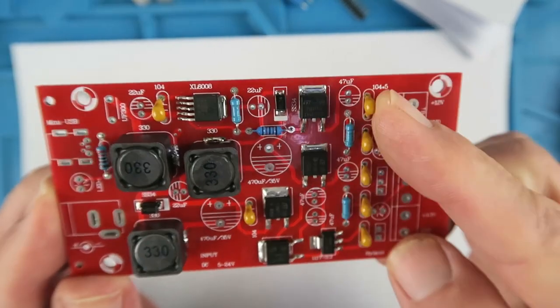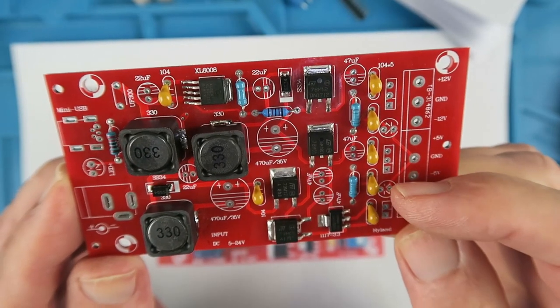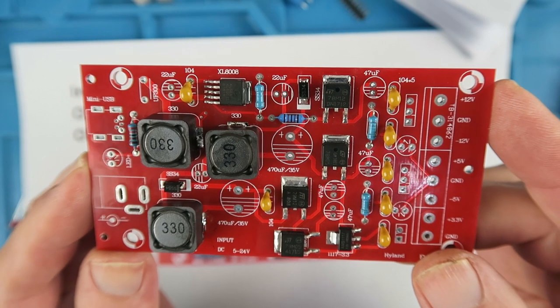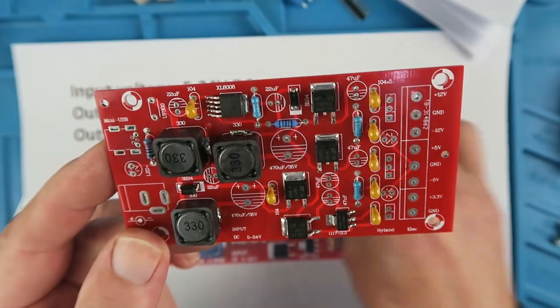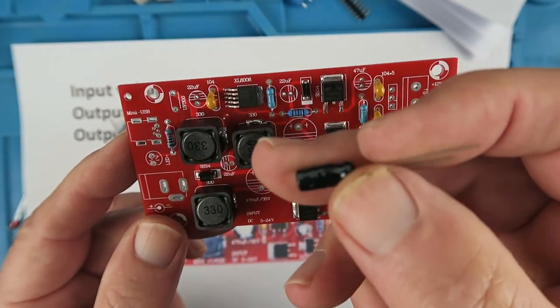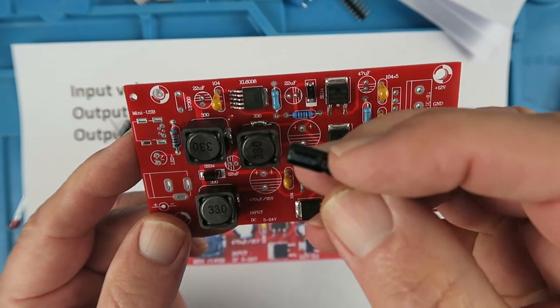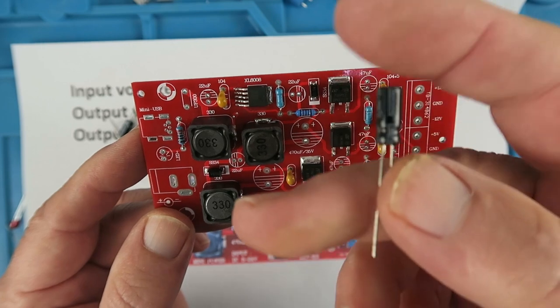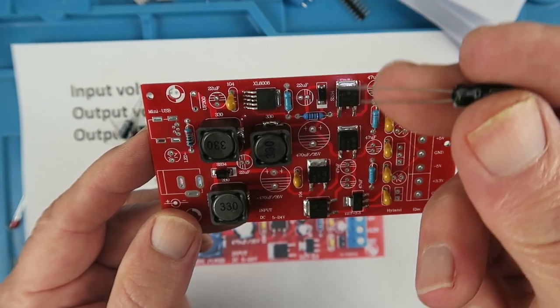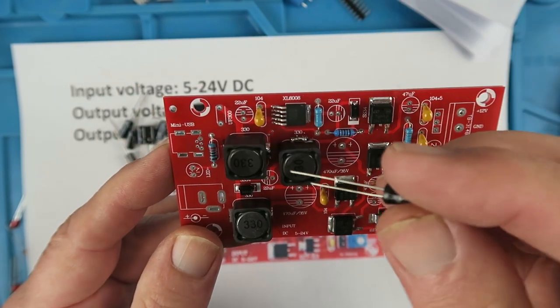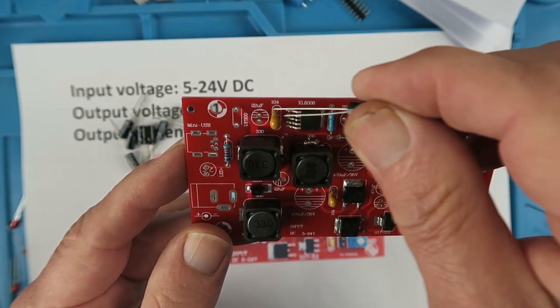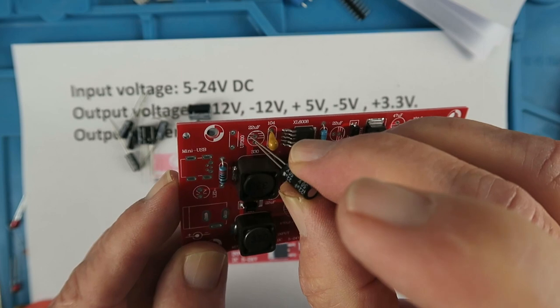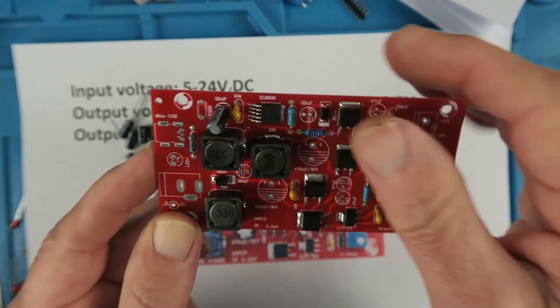I've moved ahead and fitted the small capacitors. They're all the same value so there's nothing to concern ourselves about with those. Next will be the electrolytic capacitors. Now clearly these are polarized and indicated with the negative symbol and the positive lead is longer. On the circuit board the stripy side is the negative. So this guy will go in and be soldered like that.